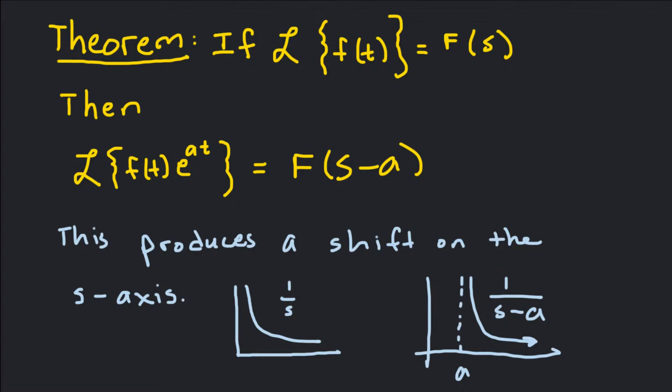This produces a shift on the s-axis. For example, if we had Laplace of 1, that would just be 1 over s. If you had something like Laplace of 1 times e to the at, that would be 1 over s minus a.